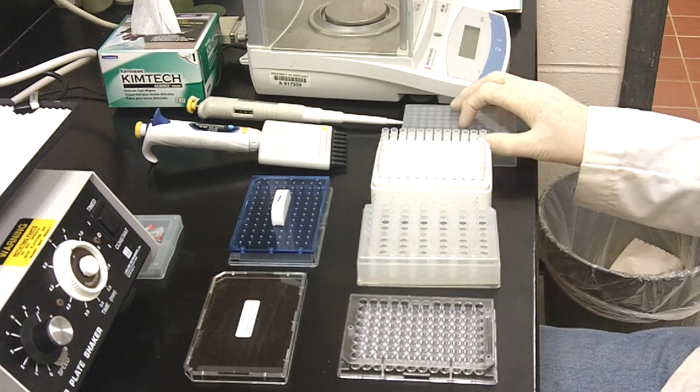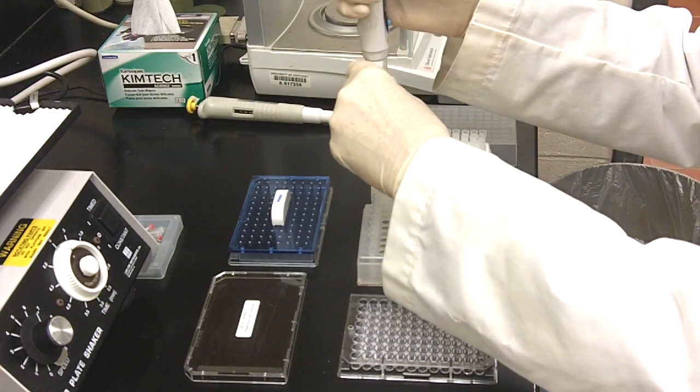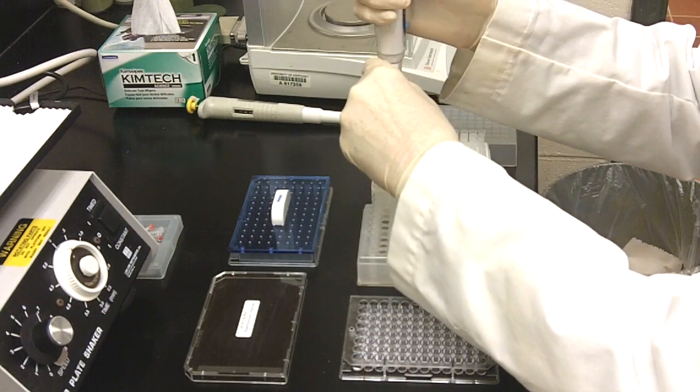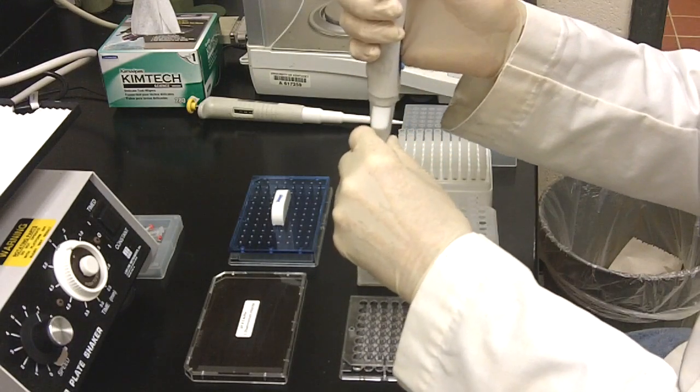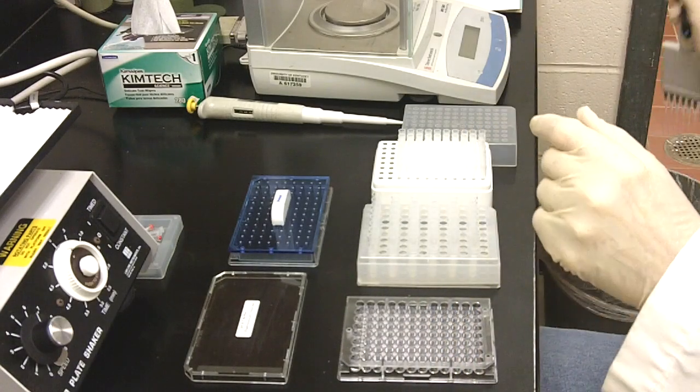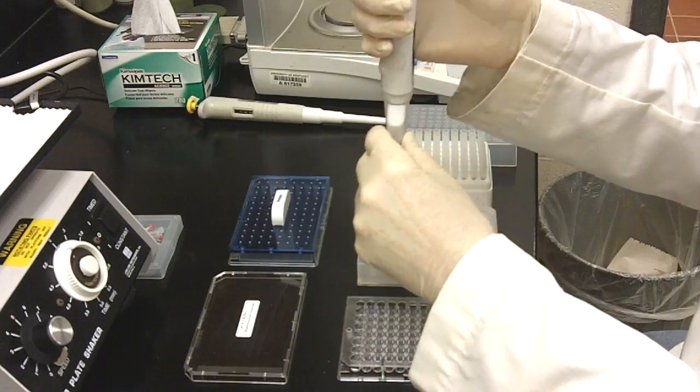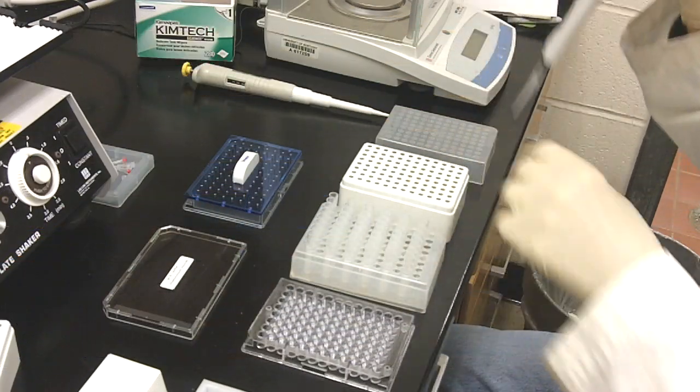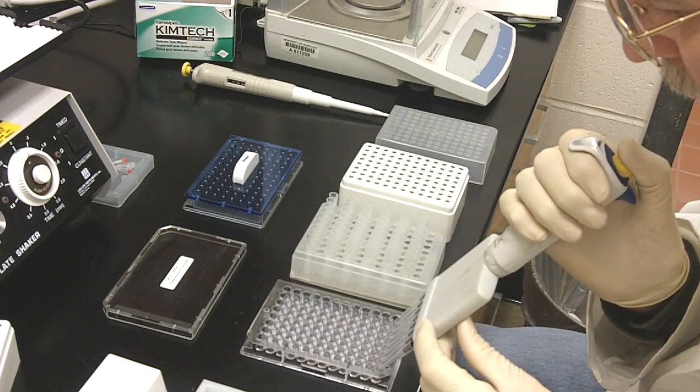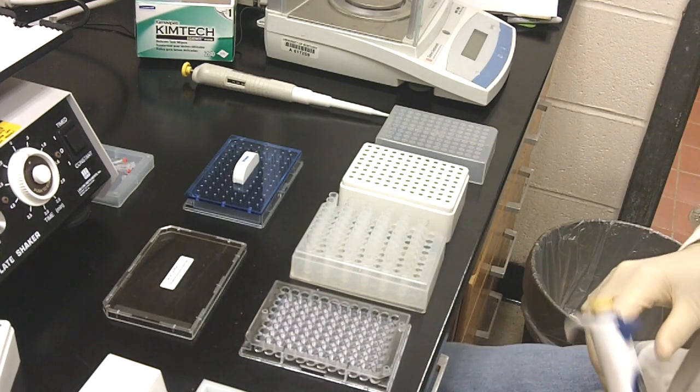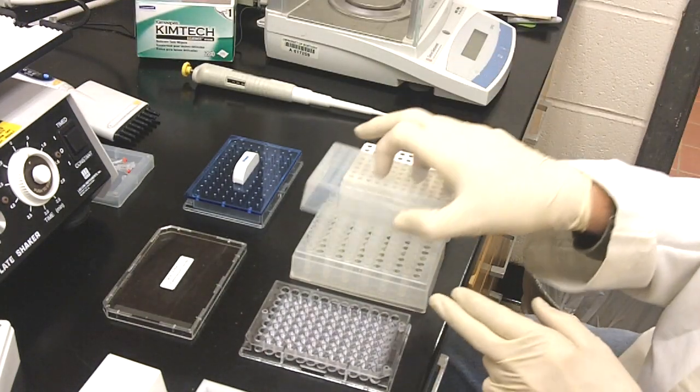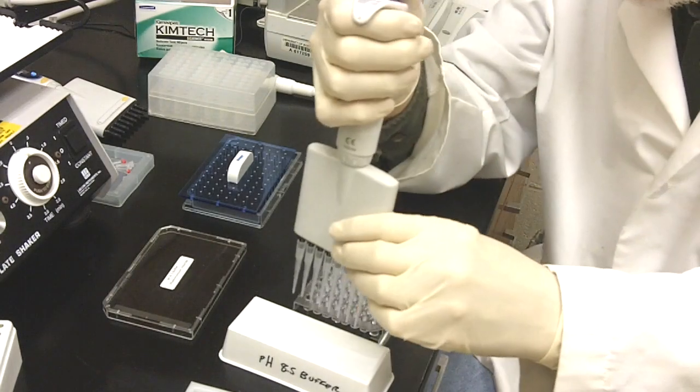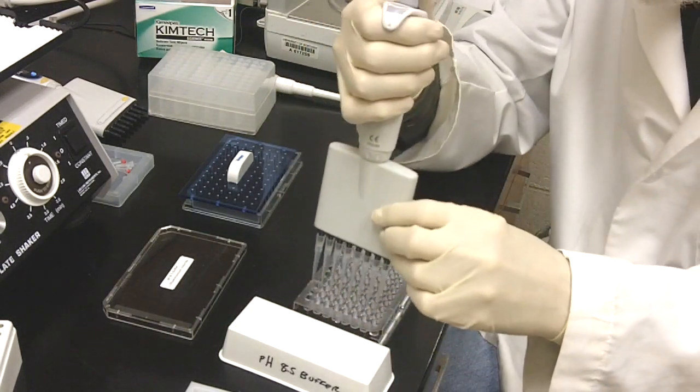It's usually more convenient to transfer the samples to cluster tubes and then use a multi-channel pipette. After the samples and standards have been pipetted into the microplate, the appropriate buffer is added. A total volume of about 220 microliters will ensure that there will be no spillage while the microplate is shaking.